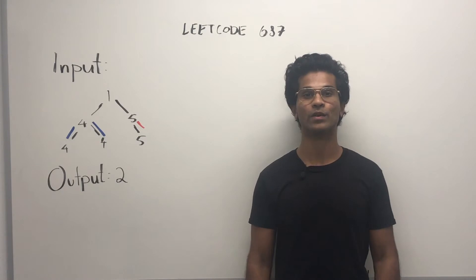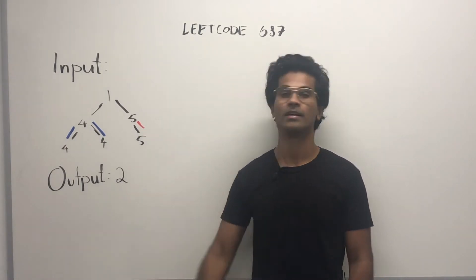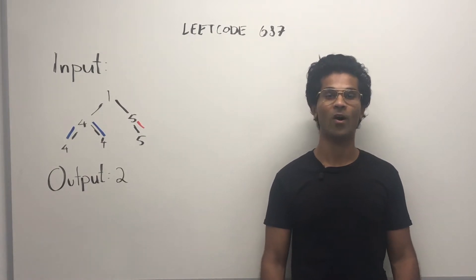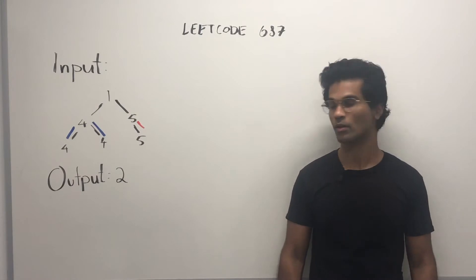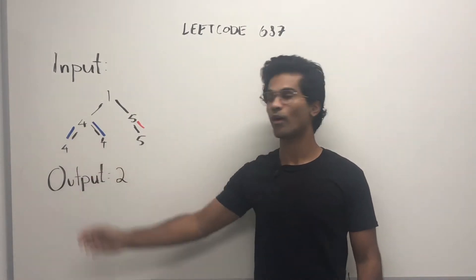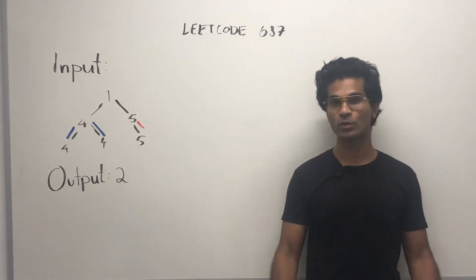The input is going to be a binary tree, the output is going to be an integer. This represents the longest length of the univalue path we have in our tree. So 4, 4, and 4 all have the same value and there's two edges in that path. That's going to be our output.